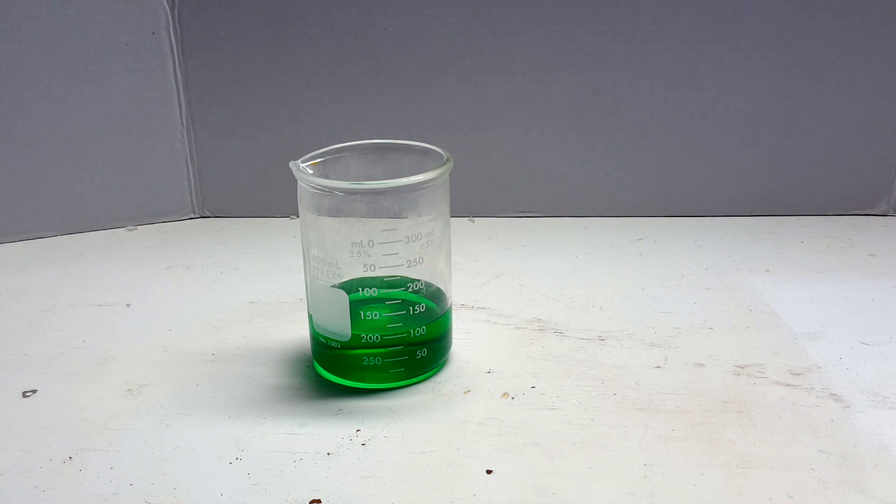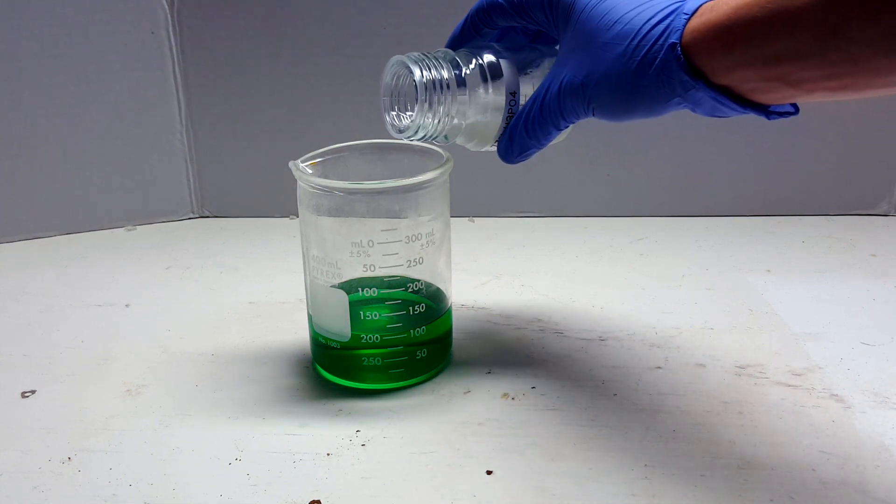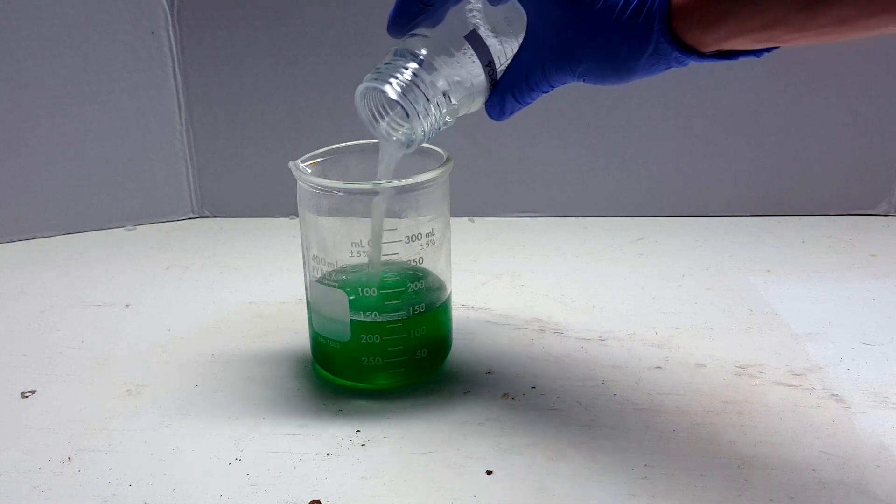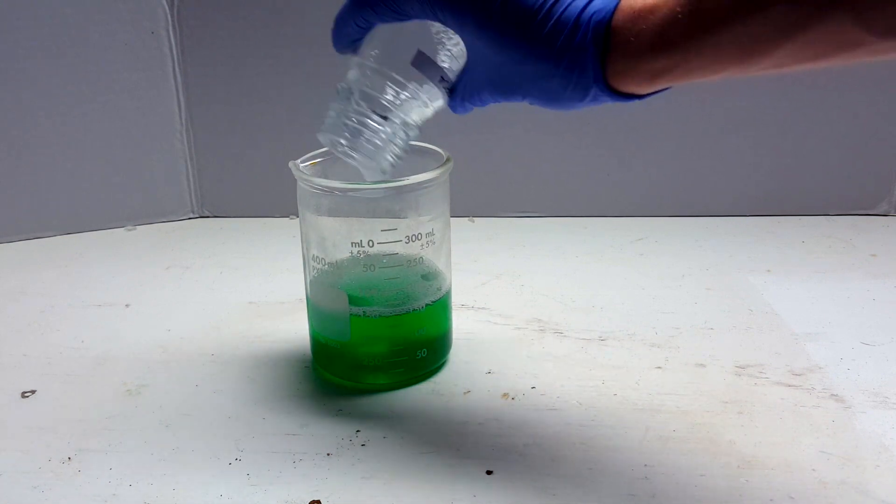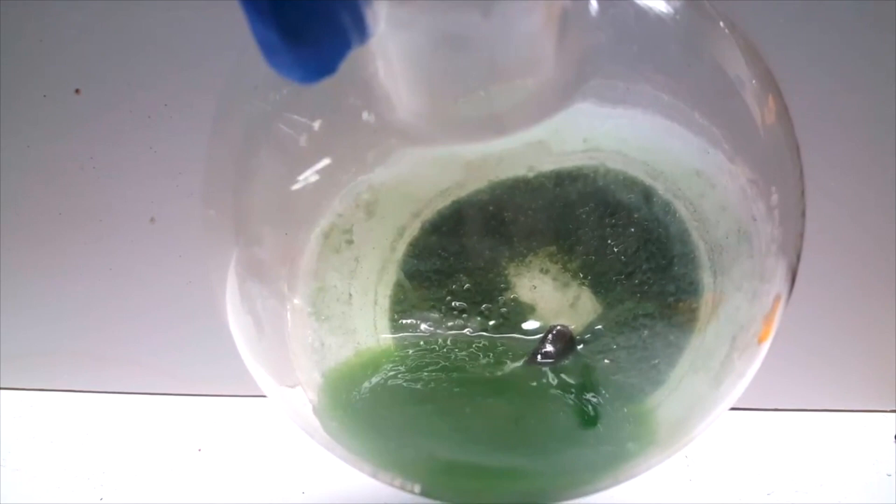So I decided to attempt this project over again. I combined the extracted phosphoric acid with the green solution so I could get a maximum yield from the original rust remover. Before going into the distillation, I want to discuss some of the issues with my previous attempt.